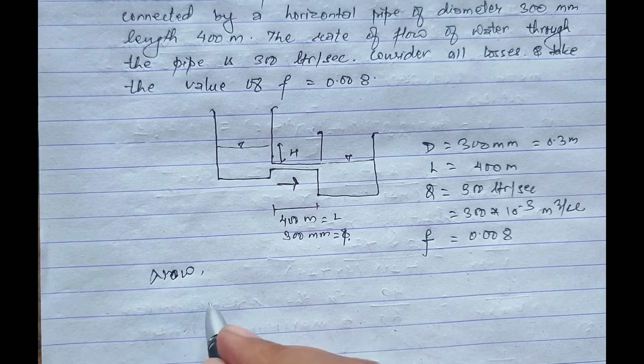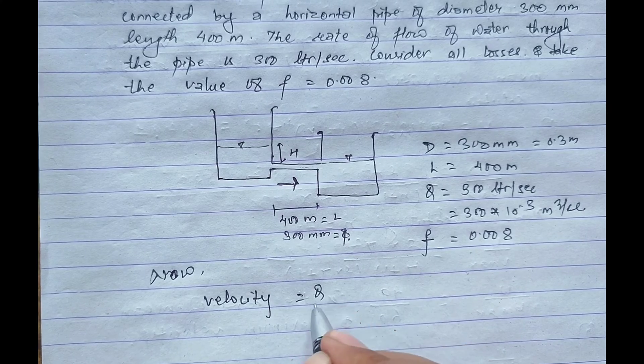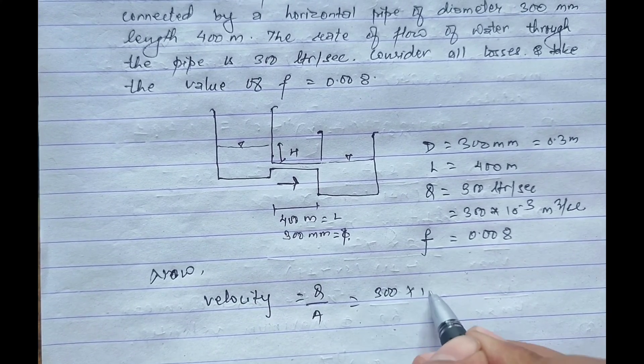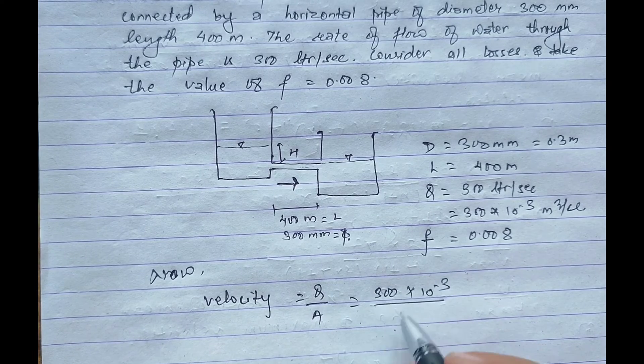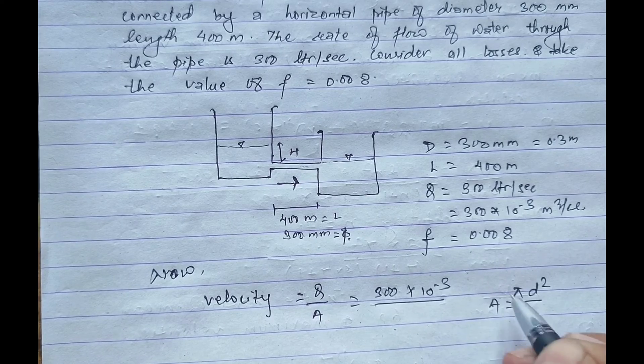First we have to calculate the velocity. Velocity v equals Q by area. Discharge is given as 300 into 10 to power minus 3.